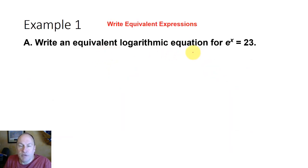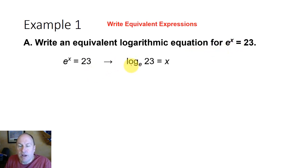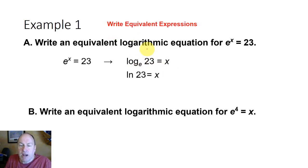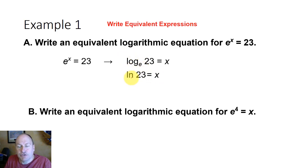Write an equivalent logarithmic equation for e^x = 23. So e^x = 23 can be written as log base e of 23 equals x, but the convention is to write it as the natural log of 23 equals x. Instead of writing log base e, we write it as the natural log.